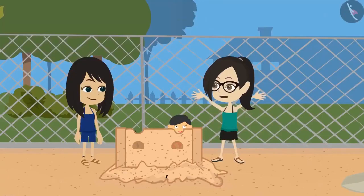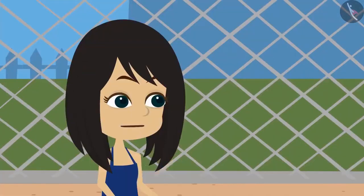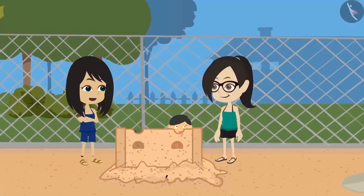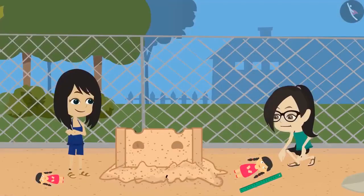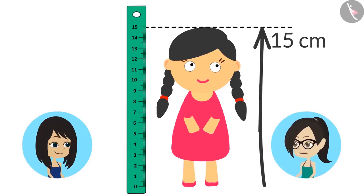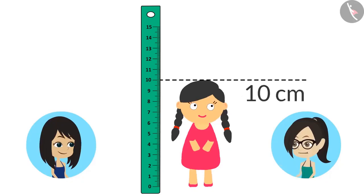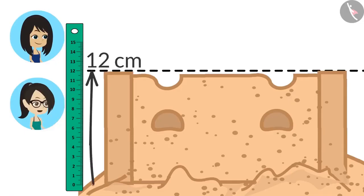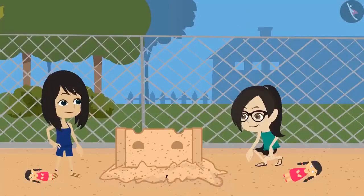Vandana says Neha should have checked her doll's height before building the fort. They decide to build another fort that can fit both dolls. They measure the heights: Neha's doll is 15 centimeters, Vandana's doll is 10 centimeters, and the original fort was 12 centimeters — that's why Neha's doll didn't fit. They decide to build a 15-centimeter-tall fort.